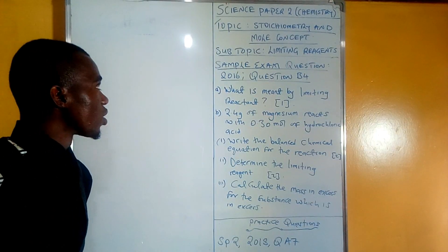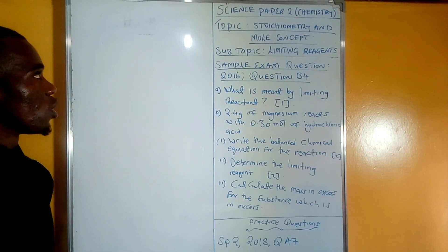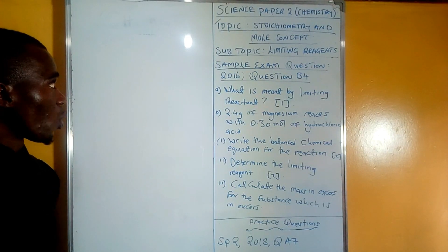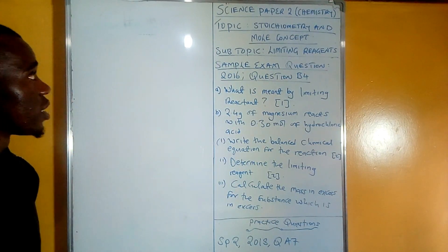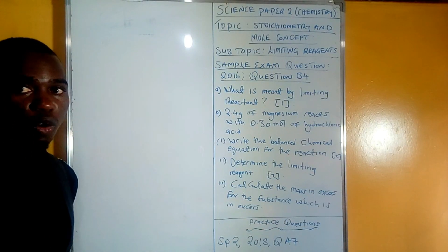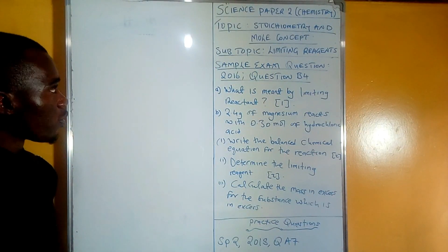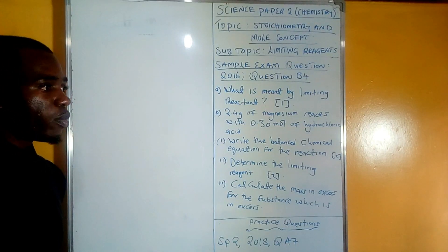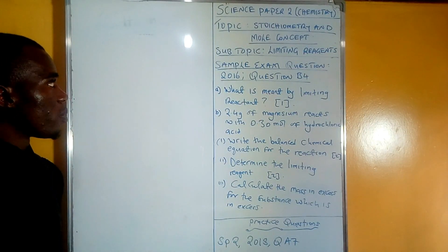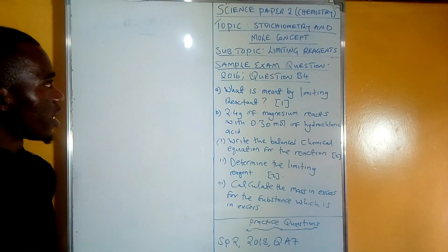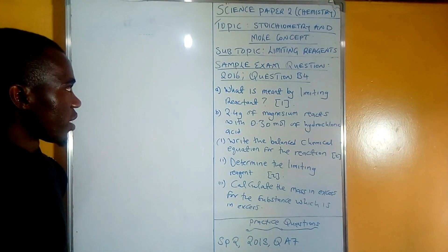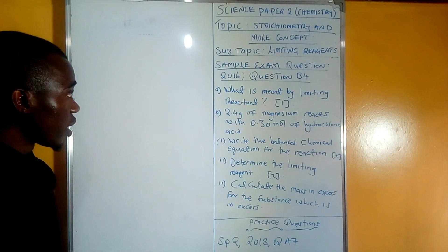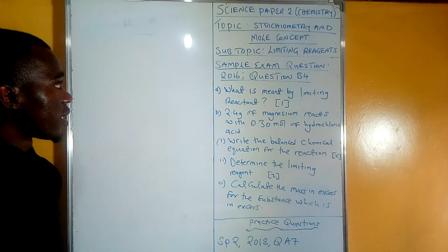Welcome to today's lesson. We are looking at Science Paper 2, which is Chemistry, following the ECZ standard. Our topic for today's lesson is stoichiometry and mole concepts. There are a lot of concepts in stoichiometry and we'll be looking at these one by one. Our subtopic in today's lesson is limiting reagents. The sample question has been extracted from 2016 Science Paper 2, question 4b, Section B.